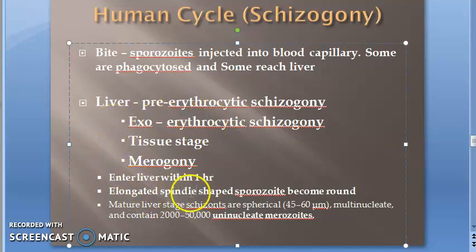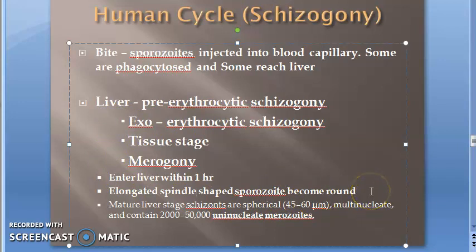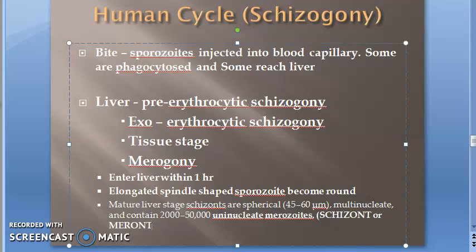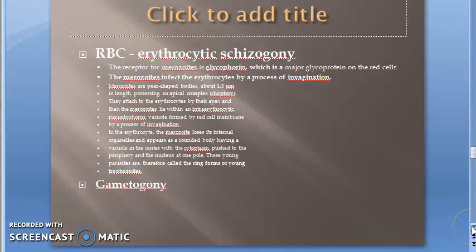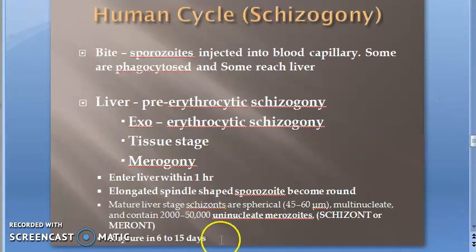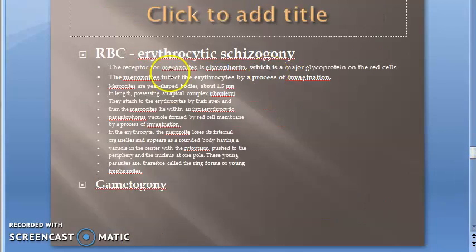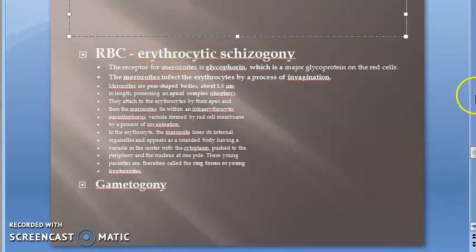This structure is called pre-erythrocytic schizogony or a meront — a schizogony containing merozoites can also be called a meront. It will rupture in 6 to 15 days and release merozoites. These merozoites then go to the RBC.